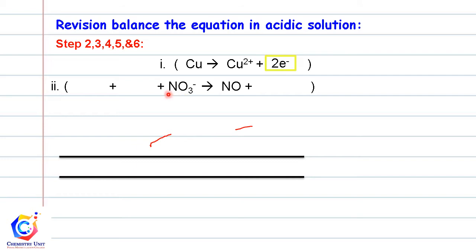And then for the second half equation, we need to balance the oxygen by adding 2H2O. And then we need to balance the hydrogen by adding 4H+ ion. And then we need to balance the charge by adding three electrons.